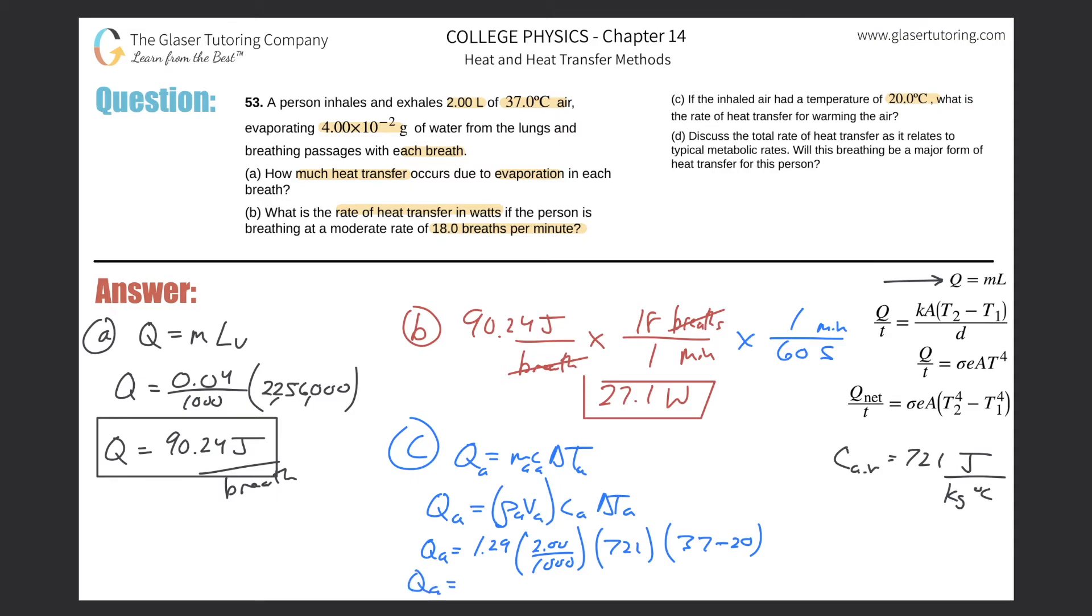So let's figure this out. So we got 1.29 times 0.002 essentially, then multiplied by 721, then multiplied by 37 minus 20, which is just 17. And this is 31.6. So this is 31.6 or so.